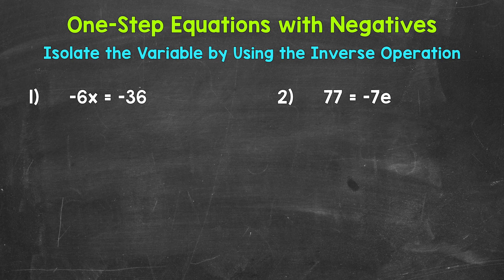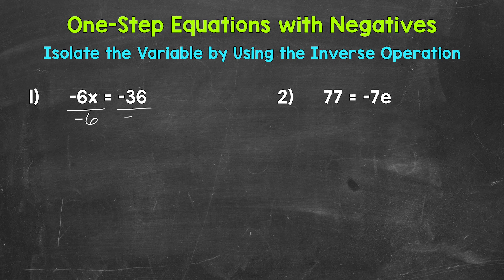Since x is being multiplied by negative 6, we need to undo that multiplication by using the inverse operation — the opposite of multiplication is division. So let's divide the left side of the equation by negative 6. Whatever we do to one side of the equation, we must do to the other in order to keep it balanced and equal. So let's divide the right side by negative 6 as well.